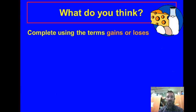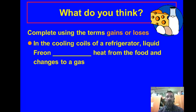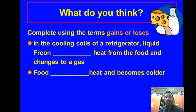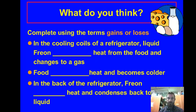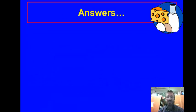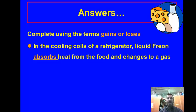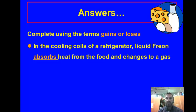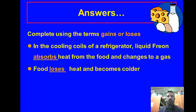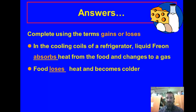One more set of questions using the terms gains or loses. In the cooling coils of a refrigerator, liquid Freon absorbs heat from the food and changes to a gas — that's an endothermic process. Food loses heat and becomes cooler — that's an exothermic process. And in the back of the refrigerator, Freon loses heat and condenses back to a liquid.